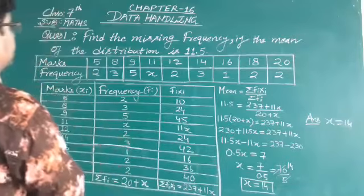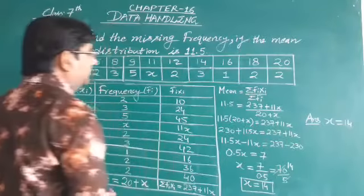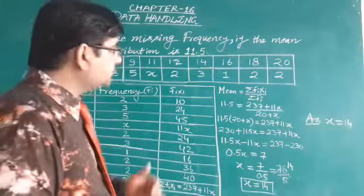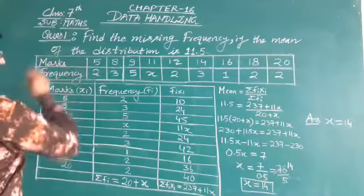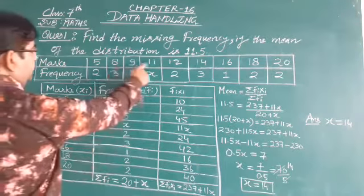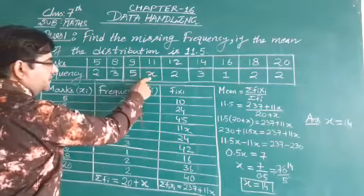The question is: find the missing frequency if the mean of the distribution is 11.5. Here, arithmetic mean is already given as 11.5. Now, the marks and frequency are also given. And here, see this marks 11 and corresponding frequency, this is missing.